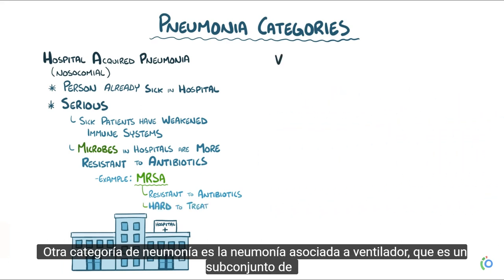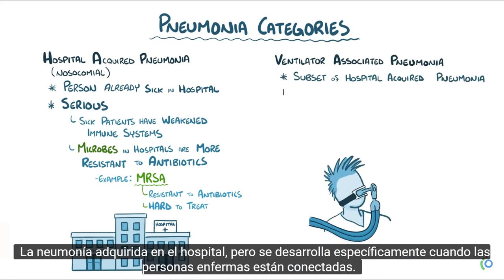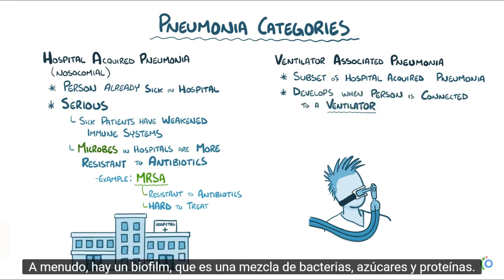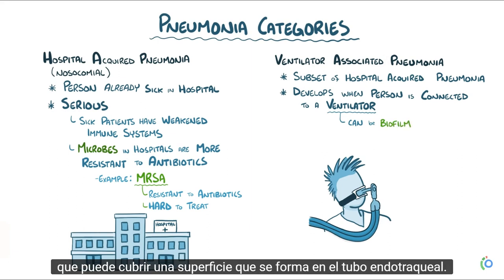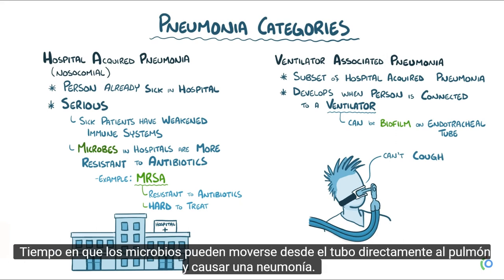Another category is ventilator-associated pneumonia, which is a subset of hospital-acquired pneumonia that specifically develops when ill individuals are connected to a ventilator. Oftentimes there's a biofilm — a mix of bacteria, sugars, and proteins — that forms on the endotracheal tube. Individuals on a ventilator can't cough and are often already very sick, so over time microbes can move from the tube directly into the lung and cause pneumonia.